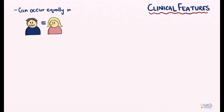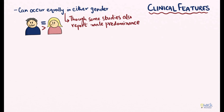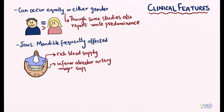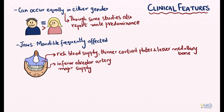Suppurative osteomyelitis can occur in both males and females at any age. The mandible is more often affected than the maxilla because the maxilla has a richer blood supply, with the mandible relying primarily on the inferior alveolar artery. Also, since the maxilla has thinner cortical plates and lesser medullary bone, infections readily diffuse into the soft tissues and sinuses.